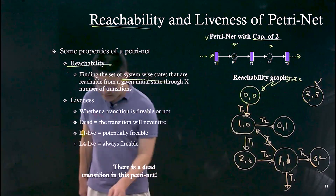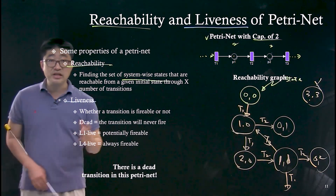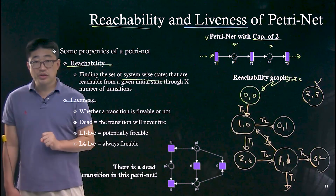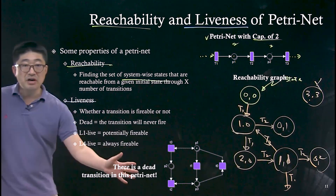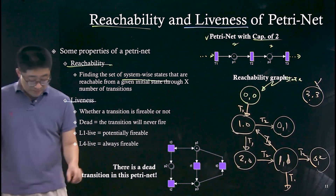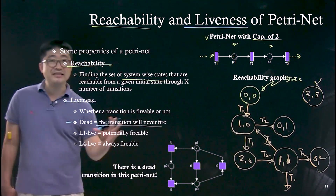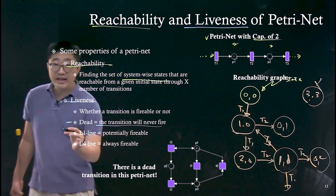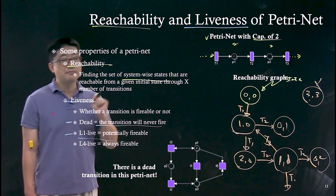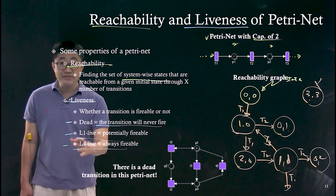There is one more analysis we can do: liveness analysis. Liveness analysis determines whether a transition can be fired or not. Some transitions can be fired and some cannot. Liveness has levels: L0 means the transition is dead — it cannot be fired forever. L1 means it cannot be fired at the moment, but in the future it may be possible. L4 liveness means a transition can always be fired.